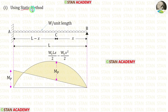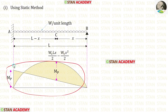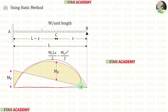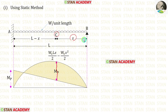First, let us use the static method. This is the bending moment diagram in a propped cantilever beam when it is subjected to UDL for the full span. In this diagram we have two parts. This is drawn using the end moment in the fixed end A, and this is drawn considering the beam as a simply supported beam. Let us assume that the maximum positive bending moment occurs at point C, which is at a distance of x from the propped end. If this distance is x, then this distance should be L minus x.